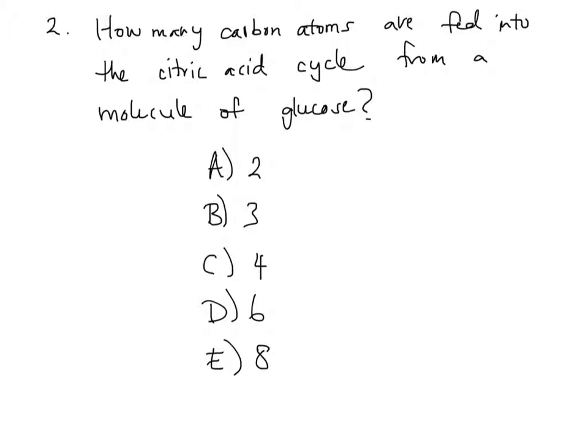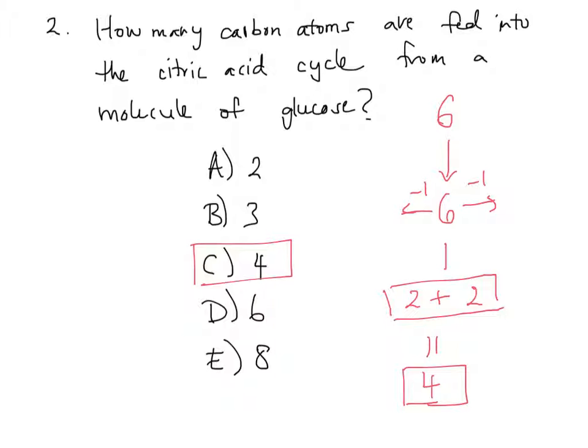All right, if you said the answer is C, 4, then you're correct. Let's think about how to come to the answer to this question. Each molecule of glucose has six carbon atoms. Now, these carbon atoms are all preserved when we end up with pyruvate, but we remember that during the preprocessing phase, each molecule of pyruvate loses one carbon atom because that preprocessing phase results in the release of carbon dioxide. As a result, we end up having two plus two carbon atoms for each acetyl-CoA molecule that enters the citric acid cycle, and that results in a total of four carbon atoms entering the citric acid cycle. Great. Let's move on to the next question.